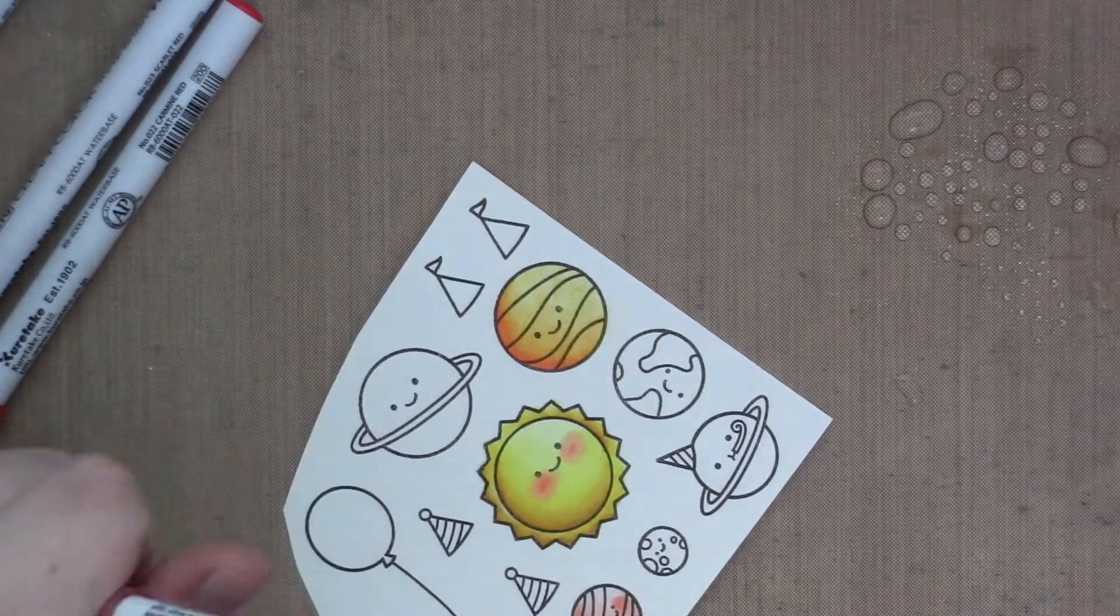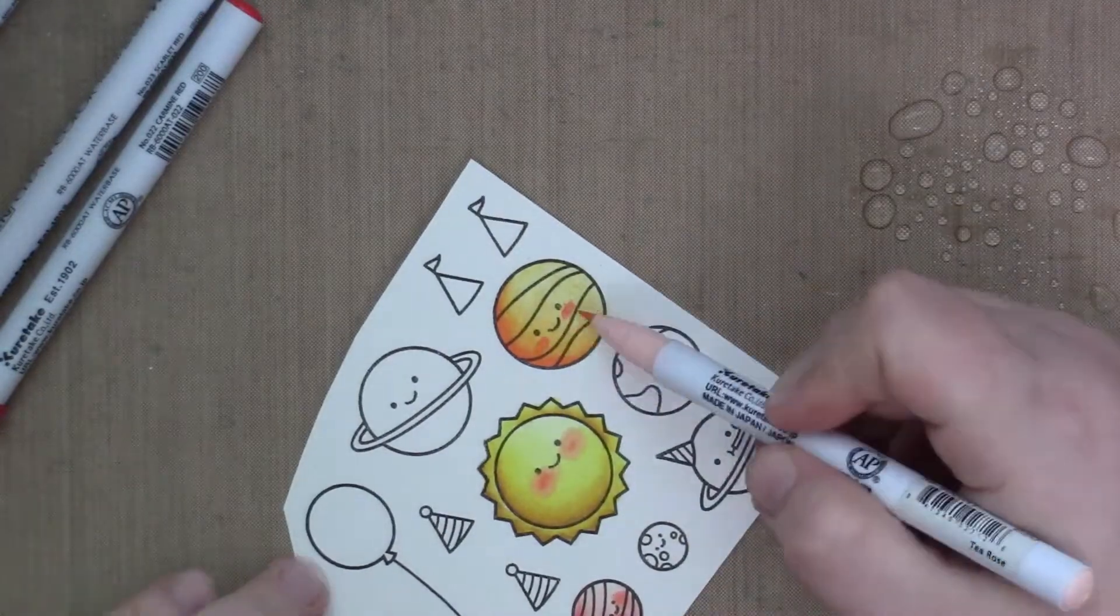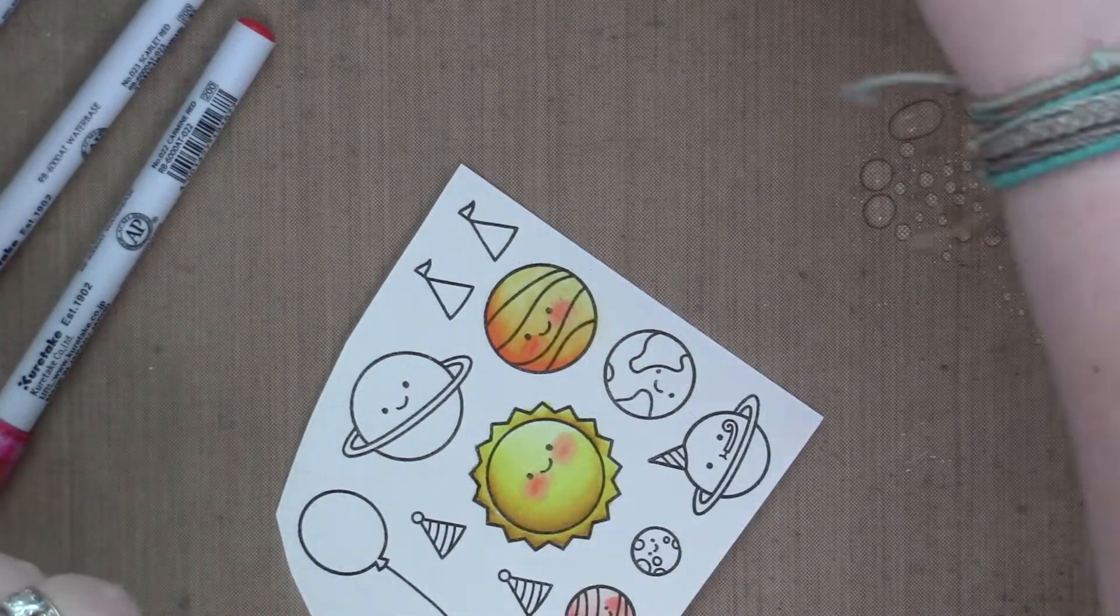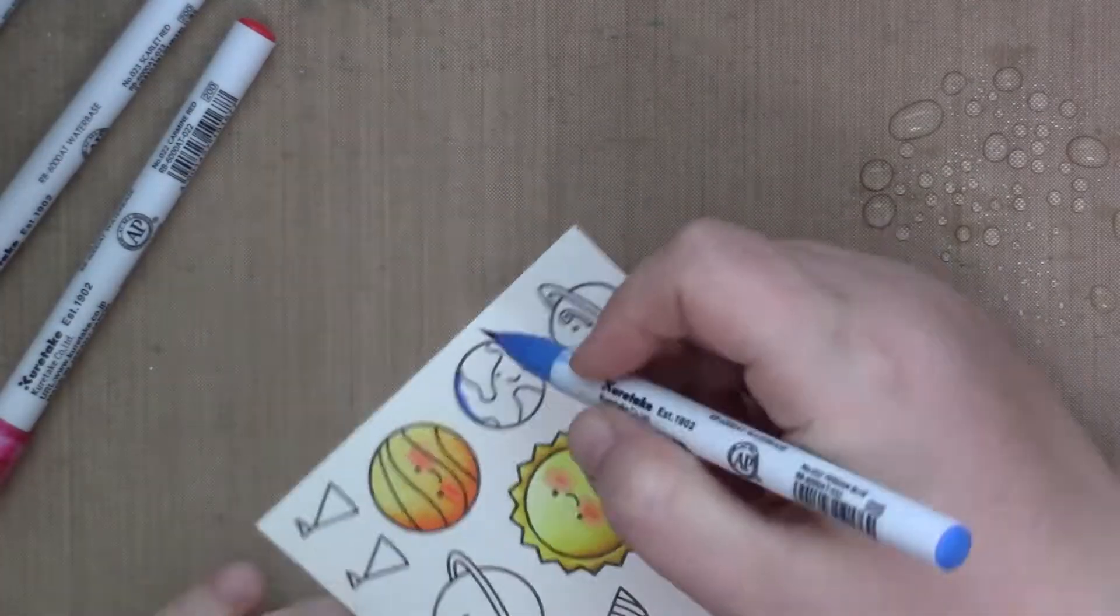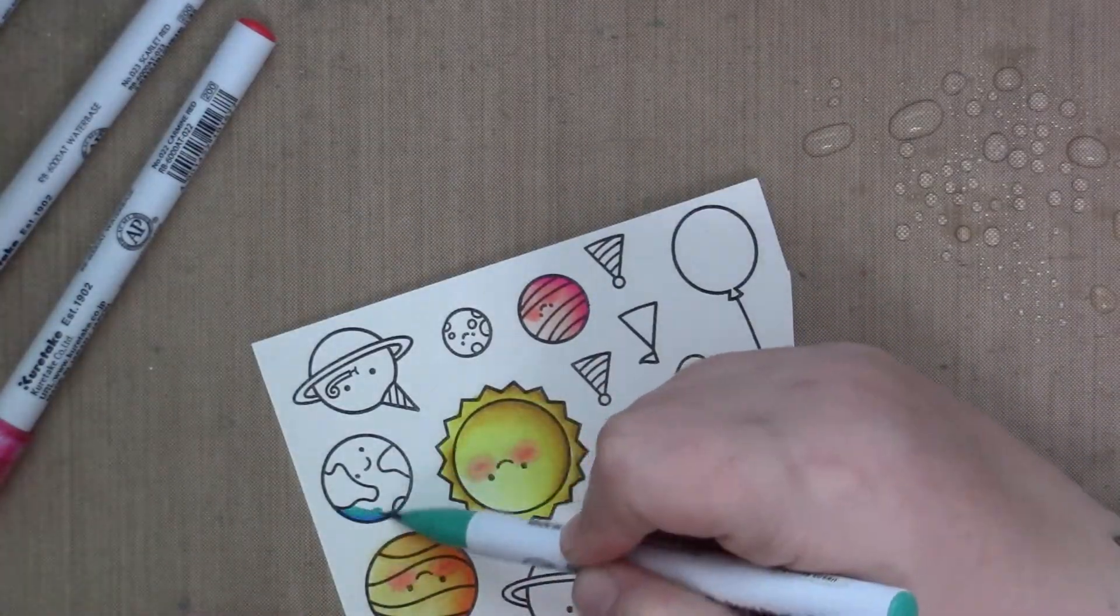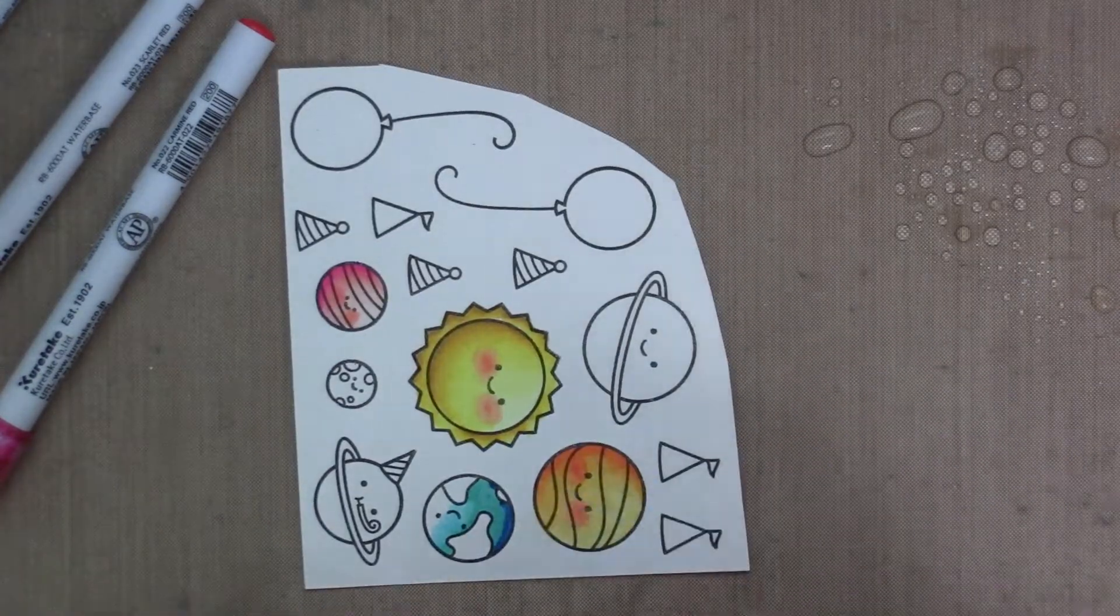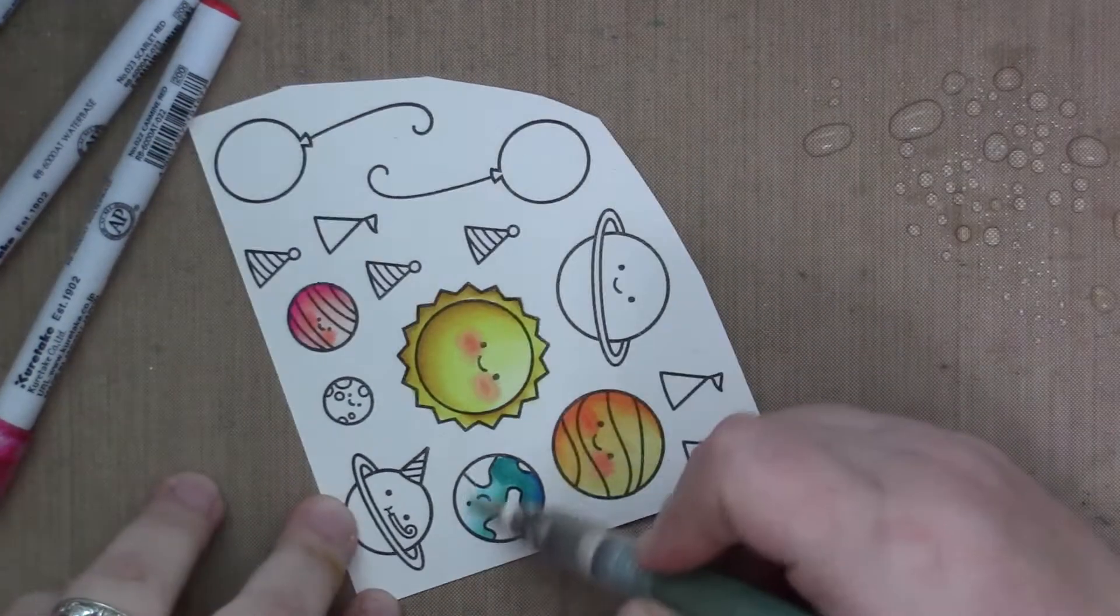The cool thing with zigs is that if you color outside the lines, you can add a little bit of water and pull that color out until it's gone and then just dab it up with a dry paper towel, and it's like it was never there. Ask me how I know, because I color outside the lines all the time.